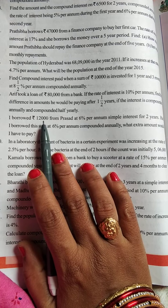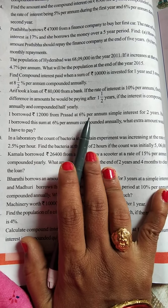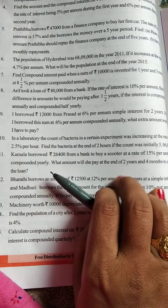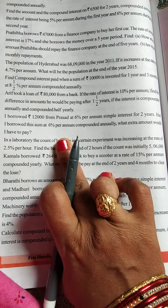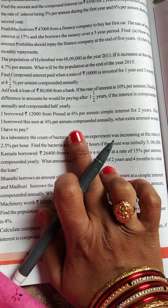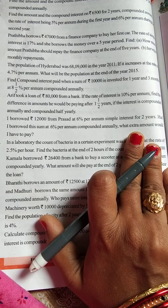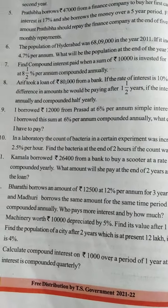Suppose I borrowed 12,000 from Prasad at the rate 6% per annum. Annum means 1 year. Simple interest for 2 years we need to find out. And had I borrowed this sum at 6% per annum compounded annually, then what extra amount would I have to pay to him? Now how we can find out?